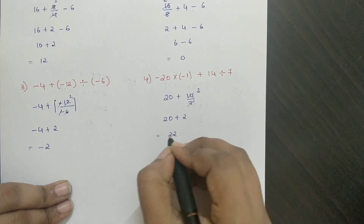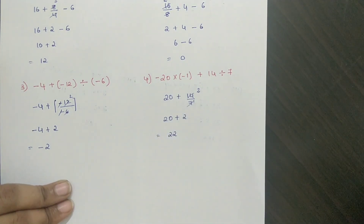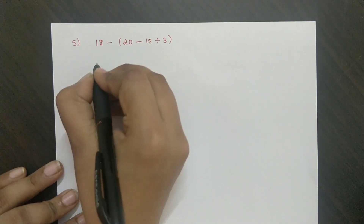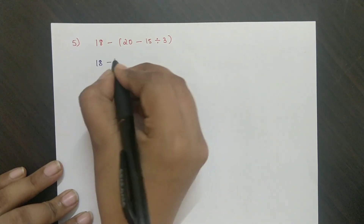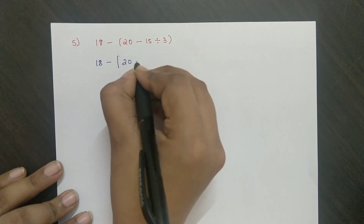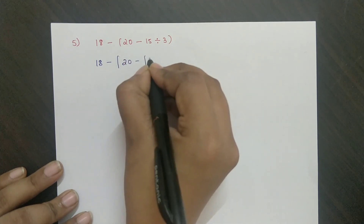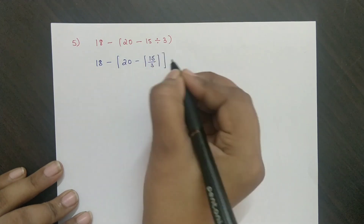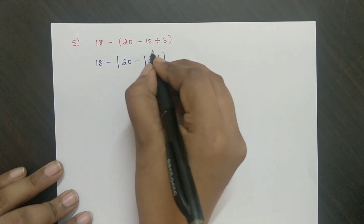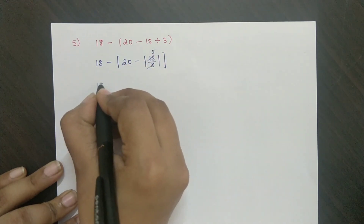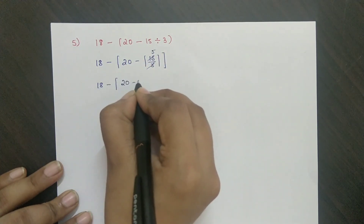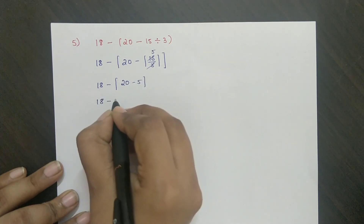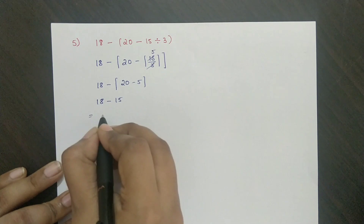Fifth problem: 18 minus in the bracket 20 minus 15 by 3. 15 divided by 3 is 5, therefore 18 minus 20 minus 5 equals 18 minus 15 which is equal to 3.